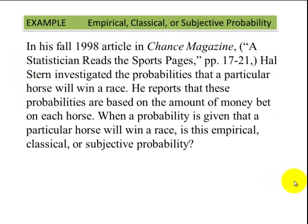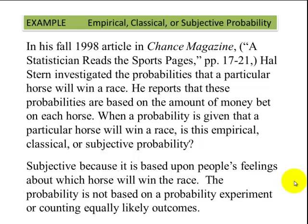In his Fall 1998 article in Chance Magazine, Al Stern investigated the probability that a particular horse will win a race. He reports that these probabilities are based upon the amount of money bet on each horse. When a probability is given that a particular horse will win the race, is this empirical, classical, or subjective? Clearly this is subjective because it is based upon these people's feelings about which horse will win the race. The probability is not based upon an experiment or counting equally likely outcomes.